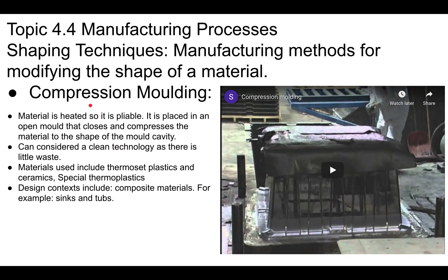This is compression molding. You can think of it as something being pressed. Materials are heated until they're pliable, placed on a mold — this is the bottom half — and then the top half comes down to squish and press all the material into shape. You see this a lot with composite materials, such as a resin or plastic with fiberglass — for example, a sink or a tub. You could also use ceramics, so a large ceramic pot could be made this way.